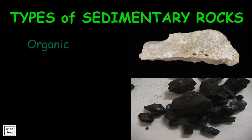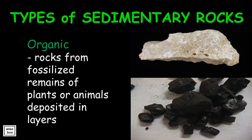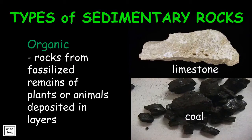Organic rocks come from fossilized remains of plants or animals, deposited in layers. Bituminous coal and limestone from shells are examples of organic rocks. This limestone forms from the accumulation of shell, coral, algal, and fecal debris. Bituminous coal forms from the accumulation and preservation of plant materials, usually in a swamp environment.